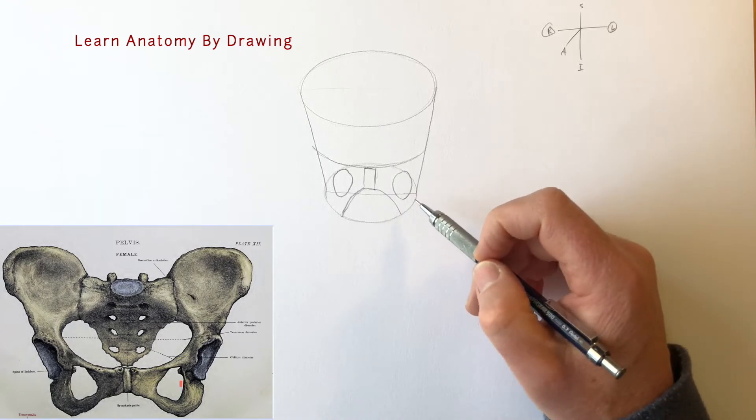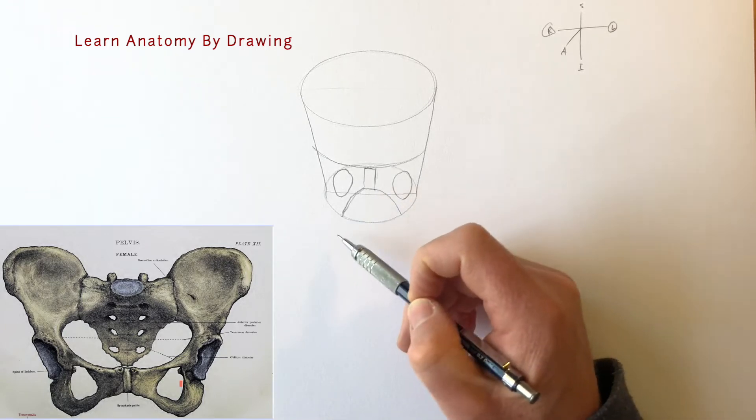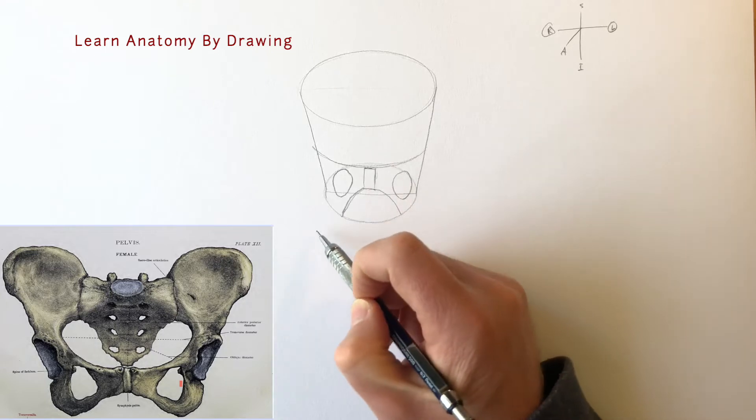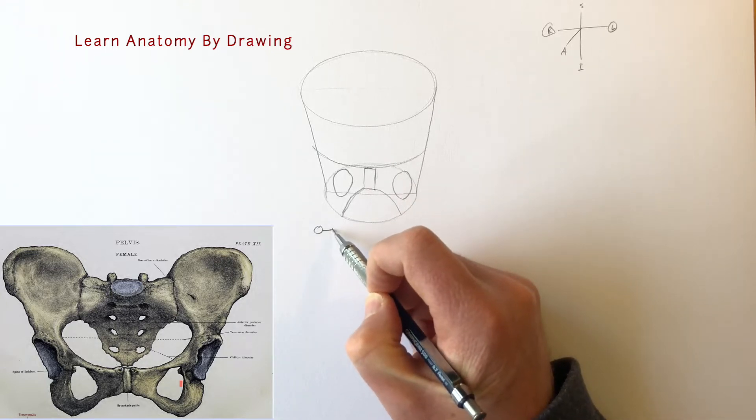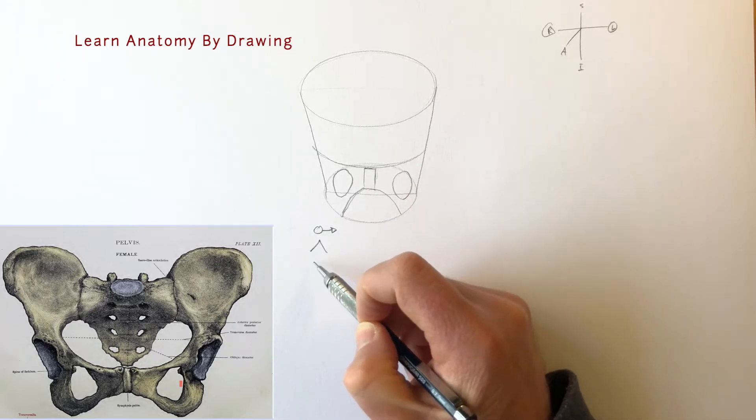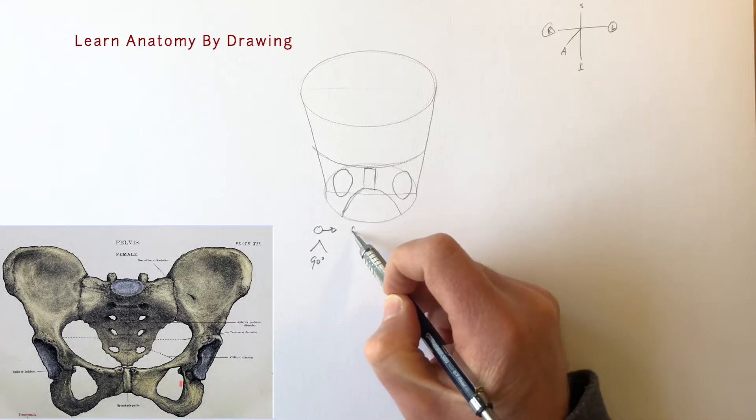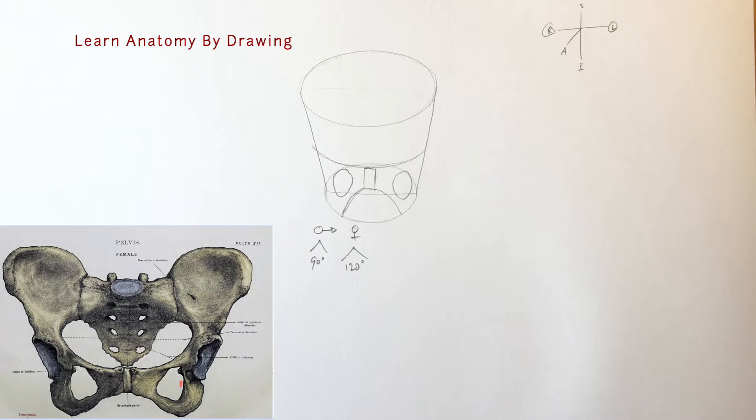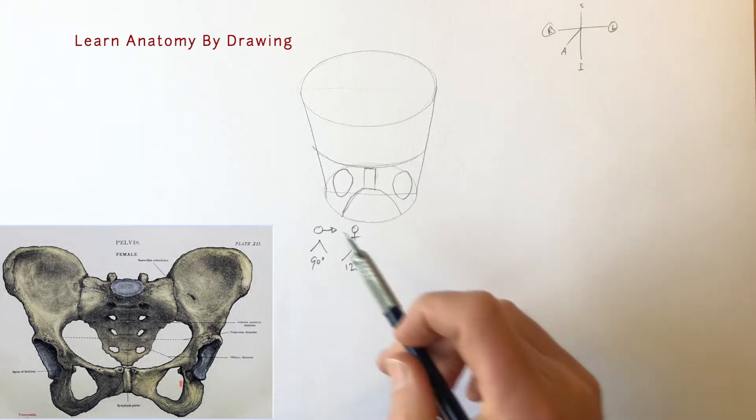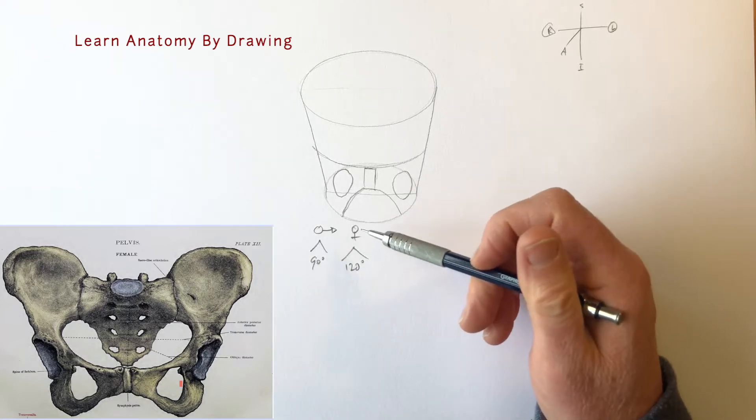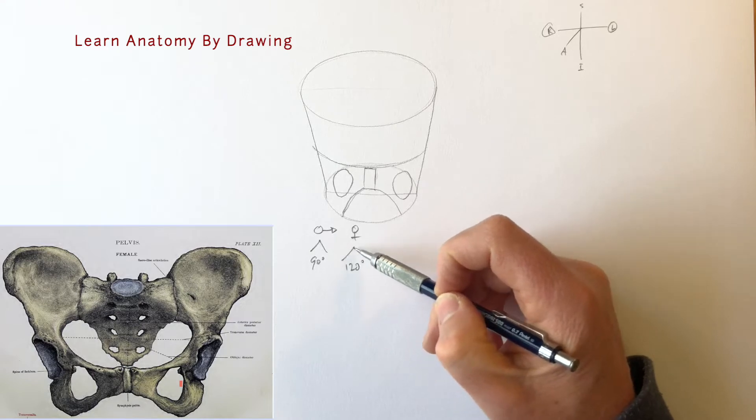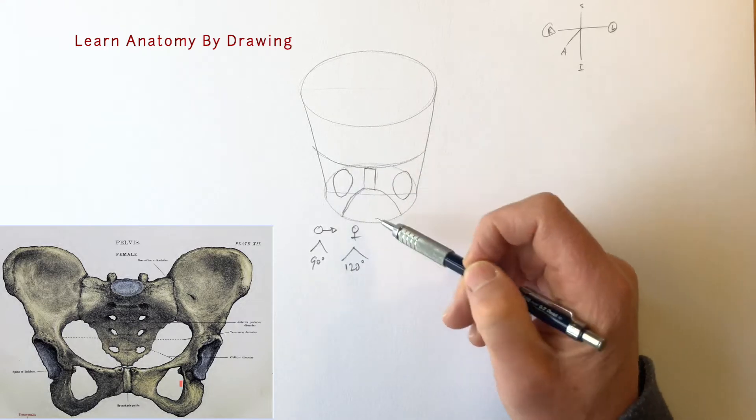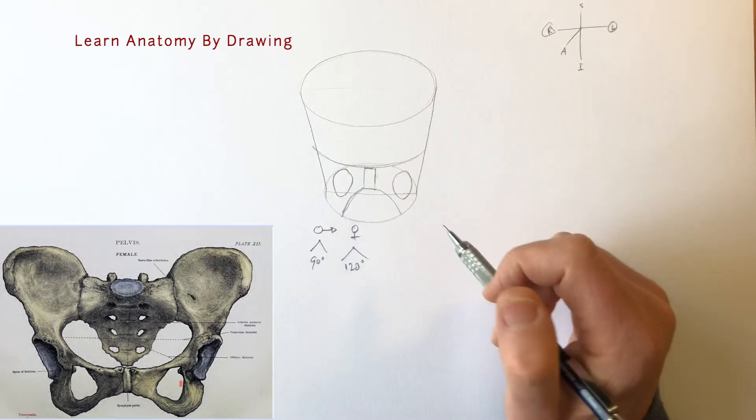Interestingly this varies from male to female. In a male the angle of this arch is 90 degrees, in a female it's 120 degrees, and I encourage you to add those in as reference points. The reason is the female has to have a wider pelvis to facilitate passage of the fetus through the pelvis.